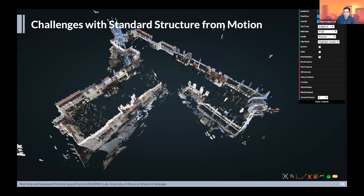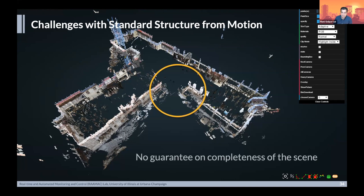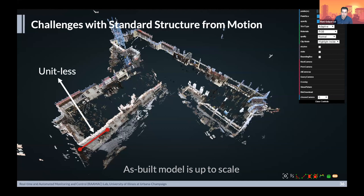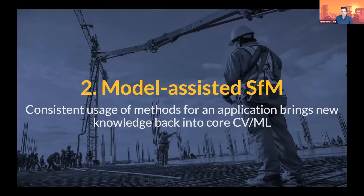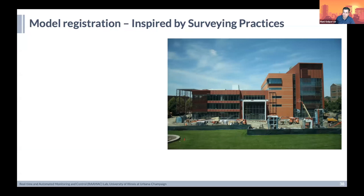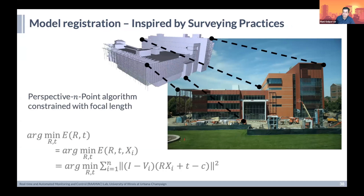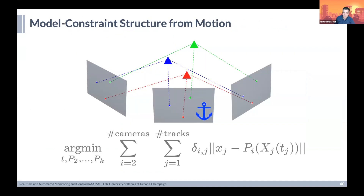Then we learned that when you apply this at scale — and I mean thousands of datasets — there are really foundational problems that surface. One is there's no guarantee on completeness of the scene if you haven't planned for the capture. So we spawned this off as model-assisted structure for motion — bringing in the knowledge of civil engineering, understanding the geometry of the scene, to guide how we solve this optimization problem. The idea was simple: instead of using BIM at the end of the process, why not bring it up front so we can use it to guide the alignment process. We can map this using a perspective endpoint algorithm to anchor the cameras, and solve a model-constrained structure-for-motion pipeline.